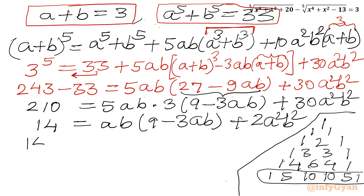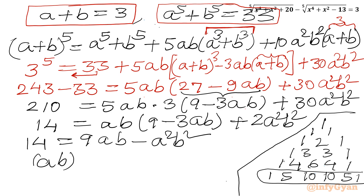Further simplifying: 14 = 9ab − 3(ab)² + 2(ab)². So rearranging: (ab)² − 9ab + 14 = 0. This is one quadratic equation in ab.